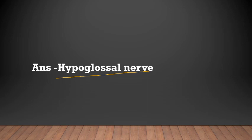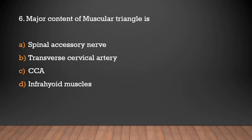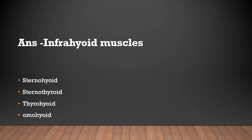The floor of the submental triangle is formed by mylohyoid muscles and the hyoid bone. The major content of the muscular triangle is the infrahyoid muscles. The four infrahyoid muscles include sternohyoid, sternothyroid, thyrohyoid, and omohyoid.